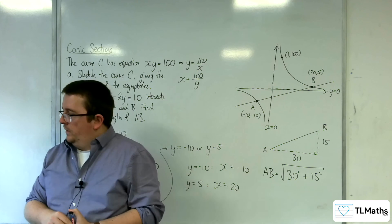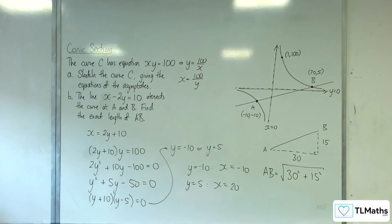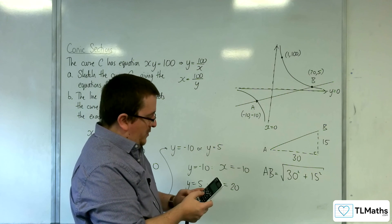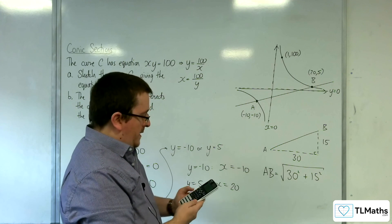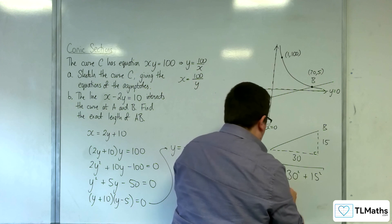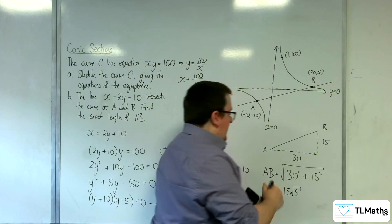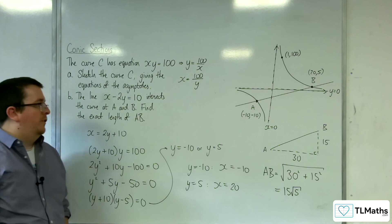Square root of 30 squared plus 15 squared is 15 root 5. So that's how we can find the length of AB.